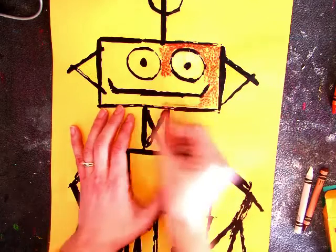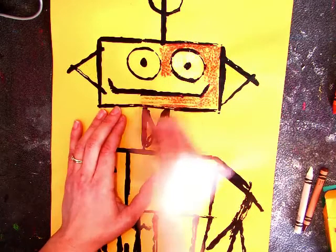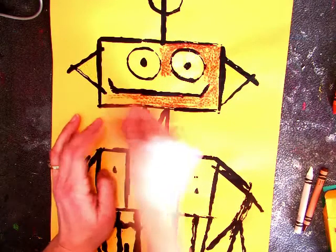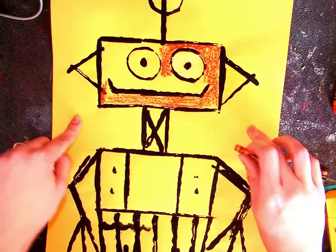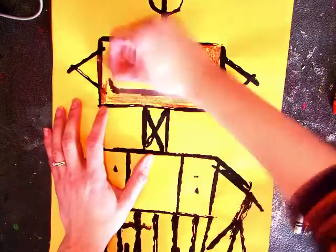So when your whole robot has color on him, then you can stop. But it should take quite a while to fill in all of this space. You don't need to color outside of your robot because your robot is going to get cut out with scissors.